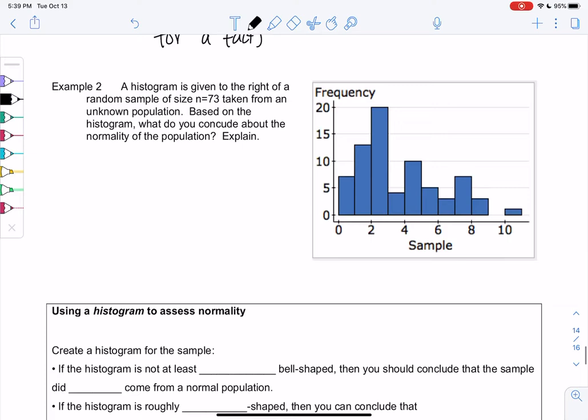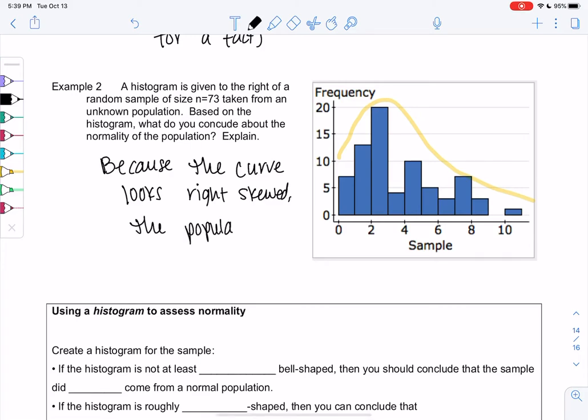Example 2: We have a histogram given to the right. This one is a random sample of sample size n=73, an unknown population. Based on the histogram what do you conclude about the normality of the population? Same idea. If I look at this curve it doesn't look normal at all. It looks like a right skewed curve. So because the curve looked right skewed it's probably not normal. The population is probably not normal. The negative case is actually easier to prove because it's so different.